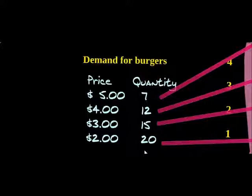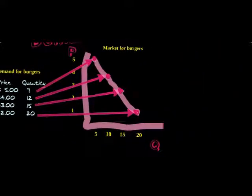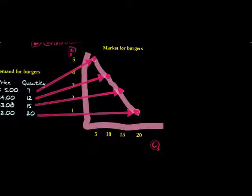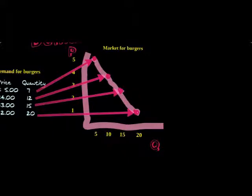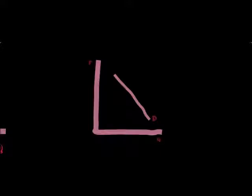What is happening to the quantity as the price is decreasing? Now let's take these numbers and turn them into a graphical representation called a demand curve. Notice how these numbers become coordinates on a graph. I've labeled the x-axis with a P for price and the y-axis with a Q for quantity. At $5 I drew a dot at 7, at $4 at 12, at $3 at 15, and at $2 at 20. Then I drew a line to connect the dots — this is a demand curve.